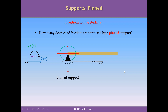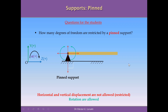The next support is the pin support. A pin support is fixed at the base and allows rotation around the hinge. It is more powerful than the roller because it does not allow displacement in the horizontal or vertical direction — only rotation around the hinge. A pin support restricts two degrees of freedom. Applying a vertical negative load will produce a rotation around the hinge, which is allowed.